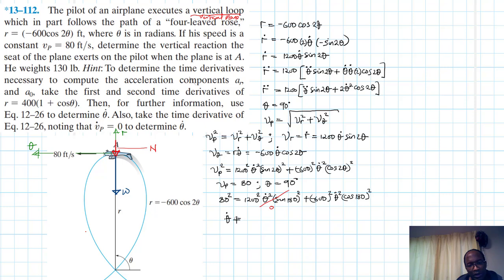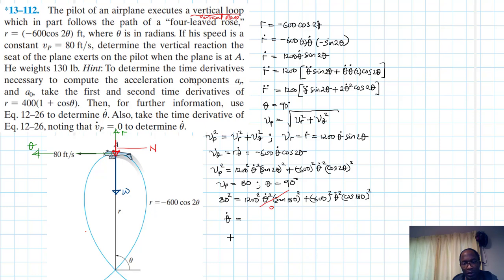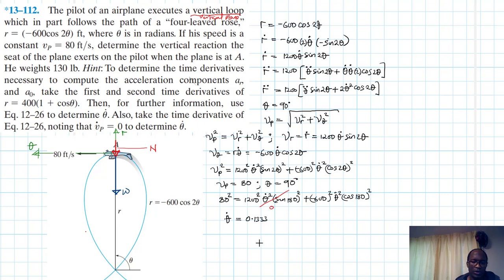Therefore theta_dot squared equals 80 squared divided by 600 squared. Cos(180°) is negative one, but squared gives one, so we can treat it as 600 squared only. Taking the square root gives theta_dot equal to 0.1333 radians per second.